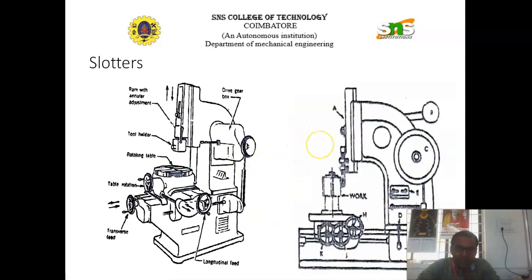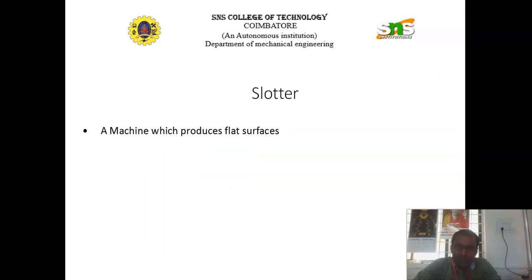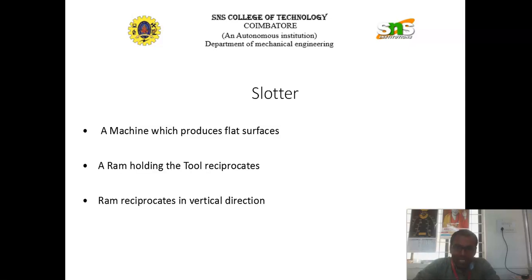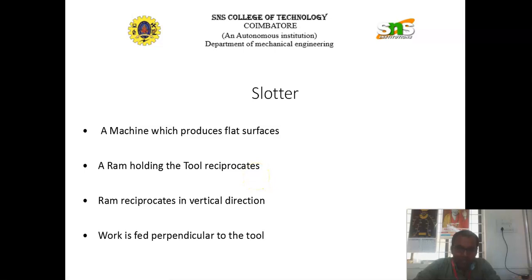These are all some of the different types of slotter which is readily available in the market for the machining of different types of operations. A slotter is a machine which produces flat surfaces. In this type of slotter, RAM is used to hold the tool. Here the tool reciprocates in to and fro motion. The RAM reciprocates in vertical direction and the work is fitted perpendicular to that of the tool.